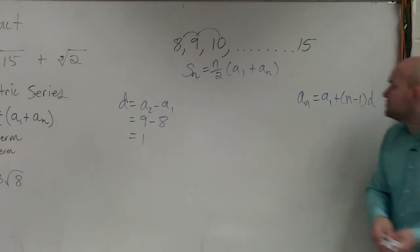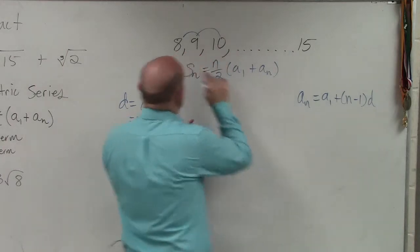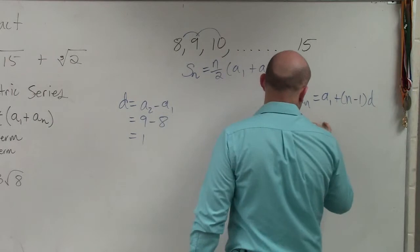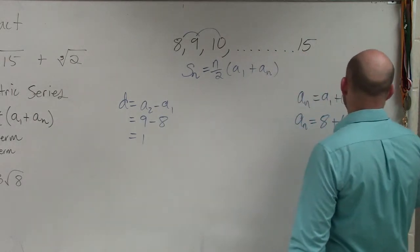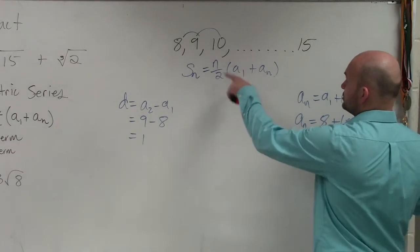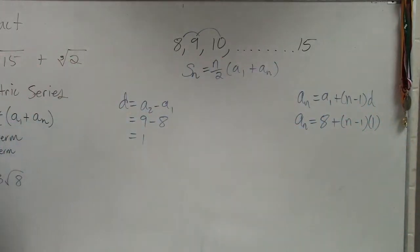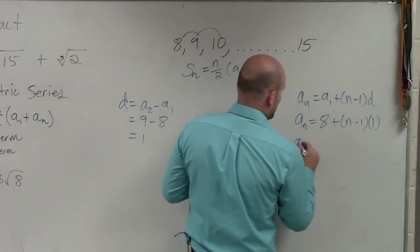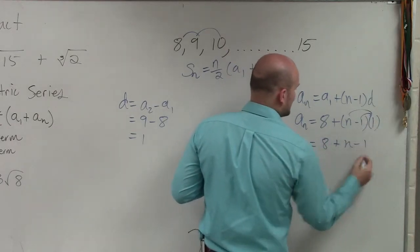So basically, what we do is the only thing we do know is a sub 1, which is 8, which is our first term, and d, which is 1. So we'd say a sub n equals a sub 1, which is 8, plus n minus 1, times d, which is 1, right? Remember, we don't know what a sub n is. So therefore, I'm going to apply this. I have a sub n equals 8 plus n minus 1.